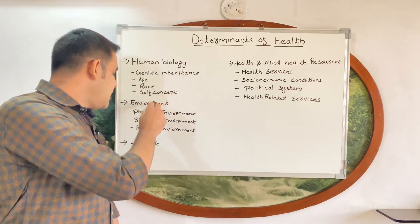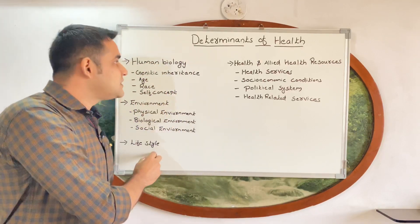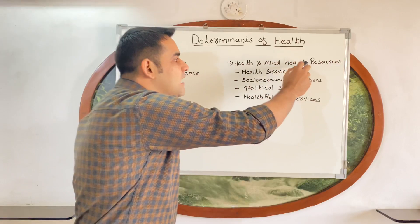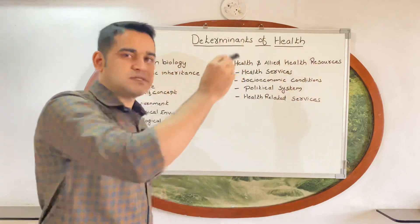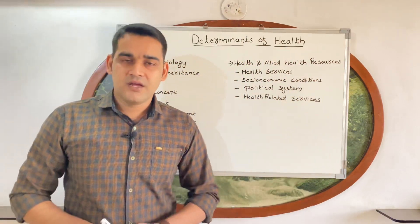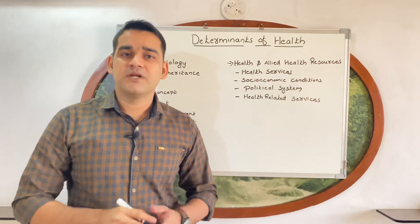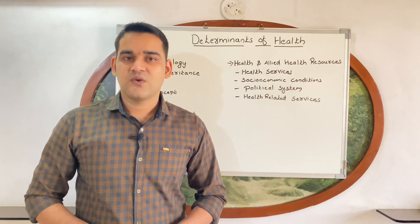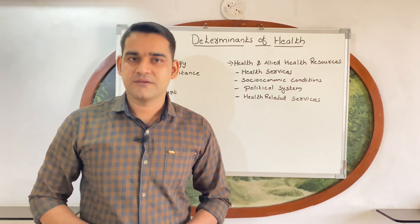That covers all the determinants of health. The four main headings are: human biology, environment, lifestyle, and health and allied health resources. That's all regarding today's topic. We will meet soon with another video. Thank you and goodbye.